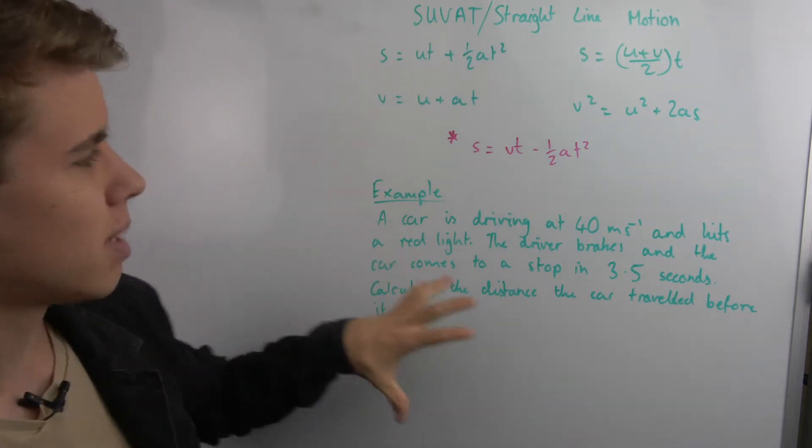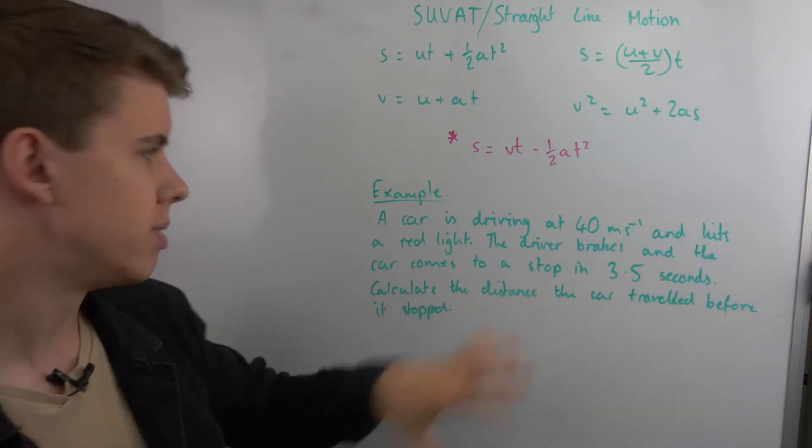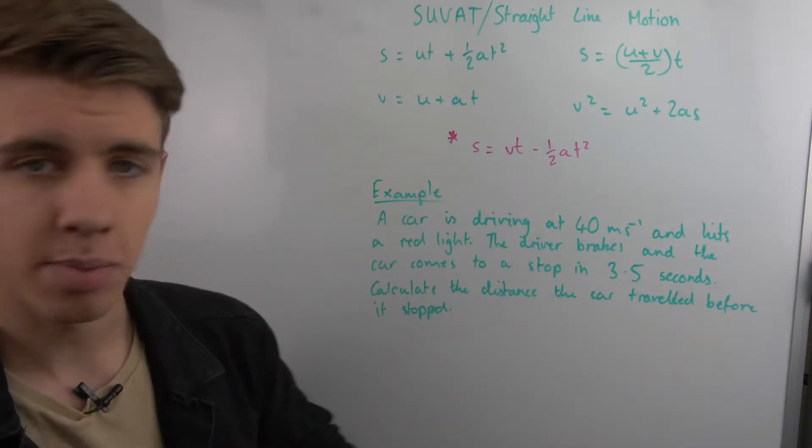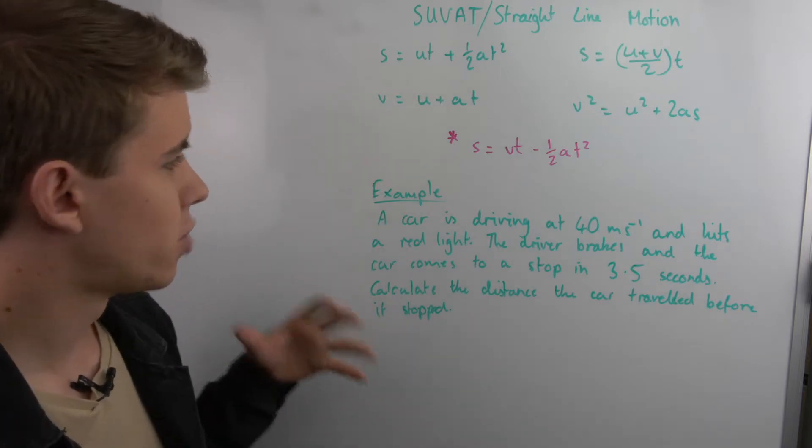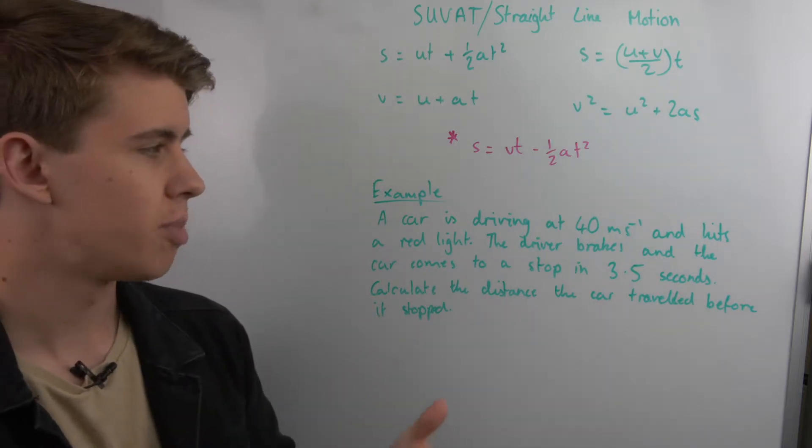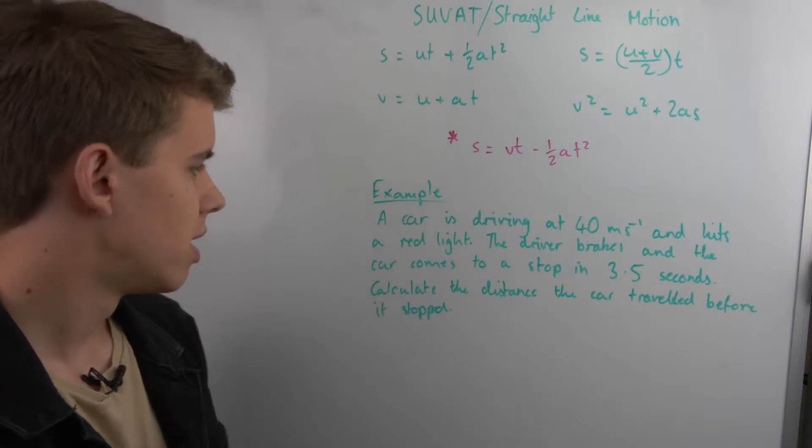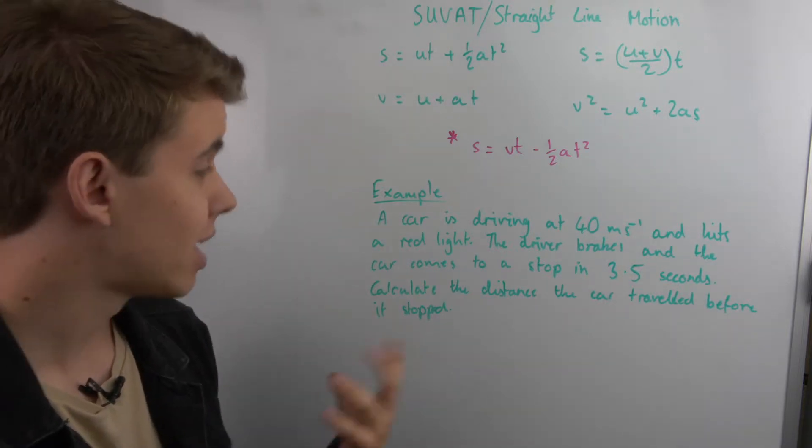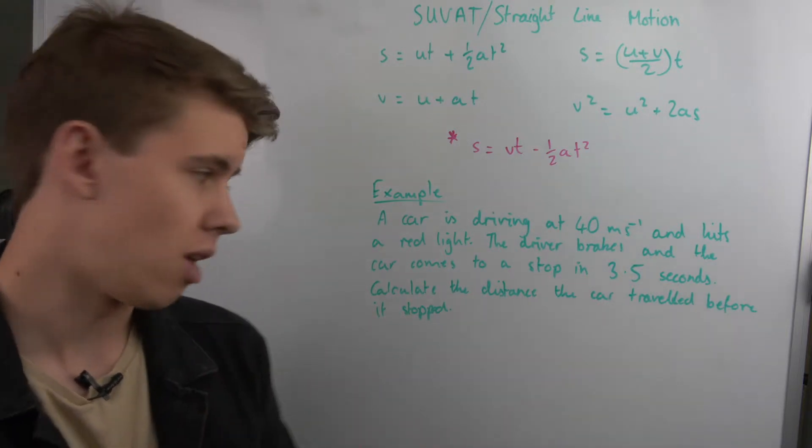So let's take an example question, and then we'll see how we can use these equations. So a car is driving at 40 meters per second, and hits a red light, the driver then breaks, and the car comes to a stop in 3.5 seconds. Calculate the distance the car traveled before the car comes to a stop.